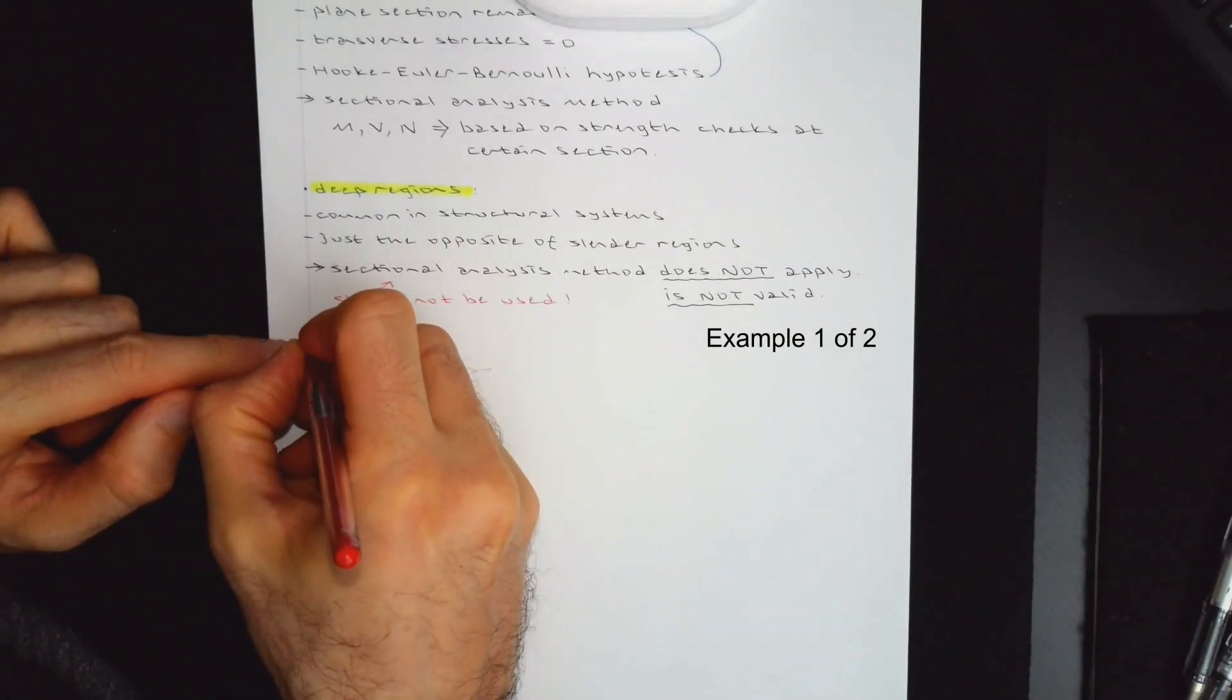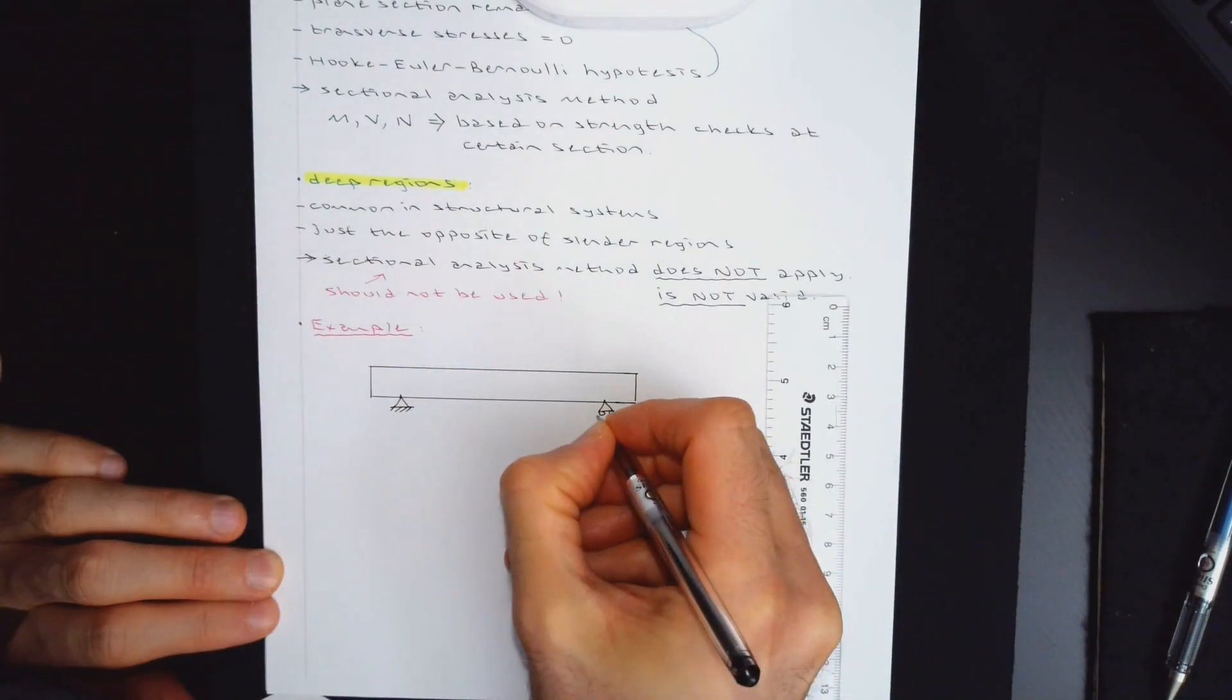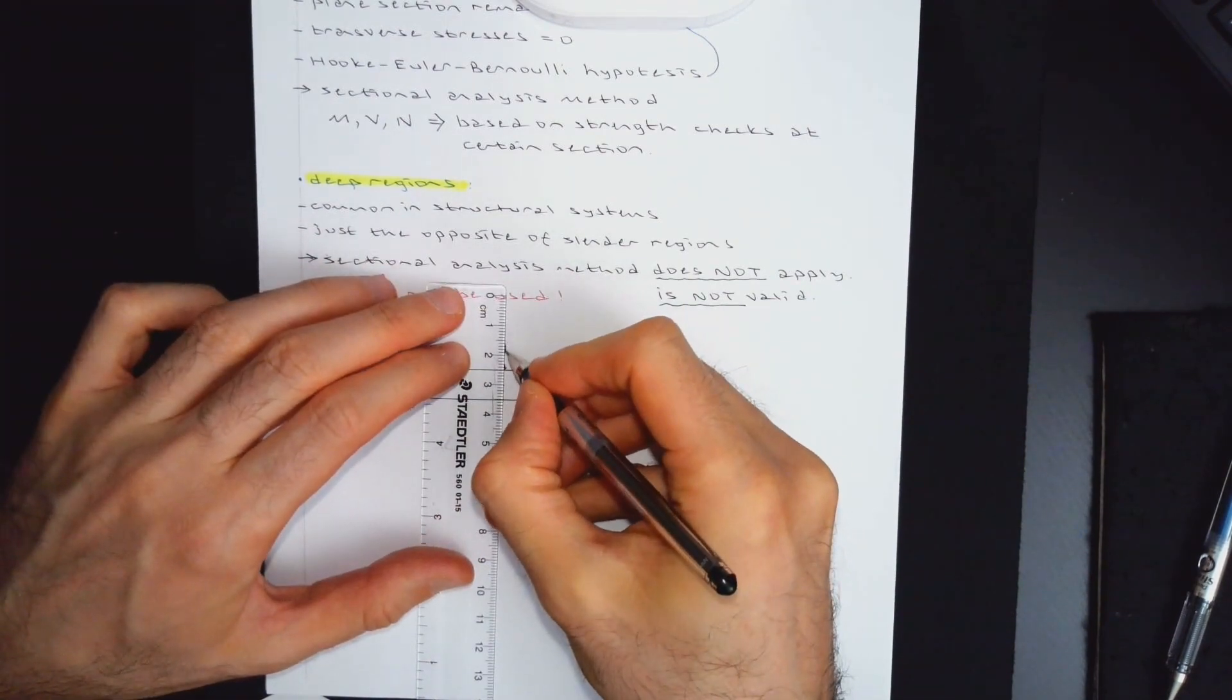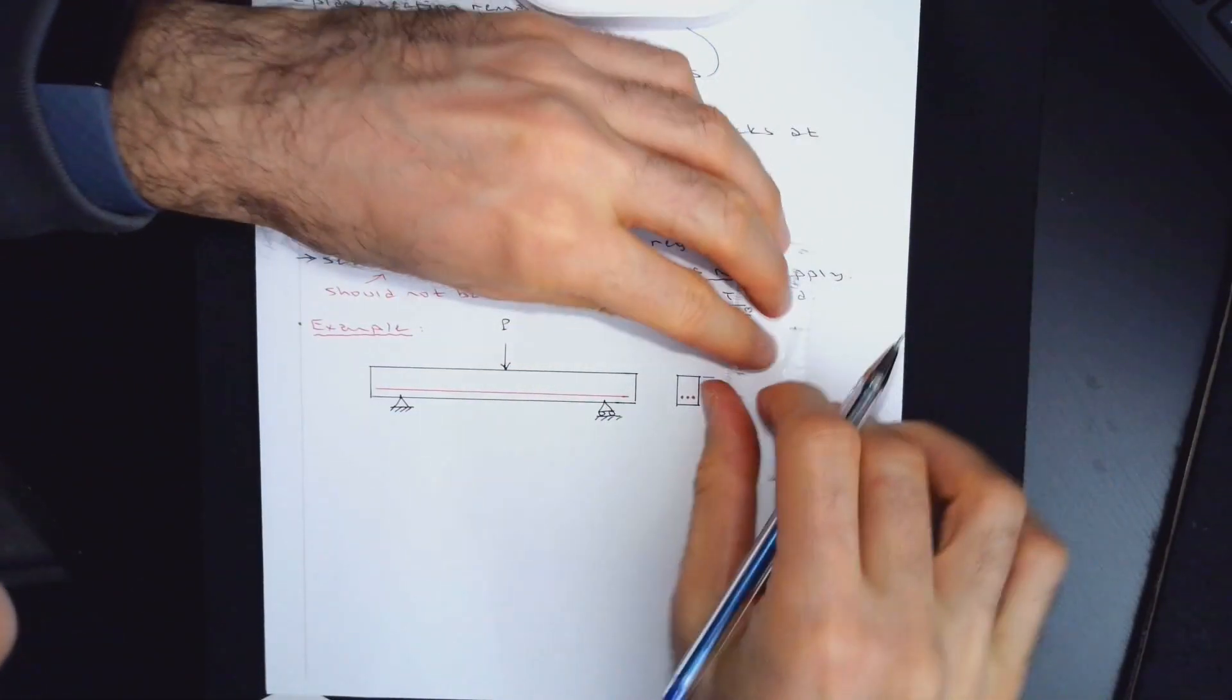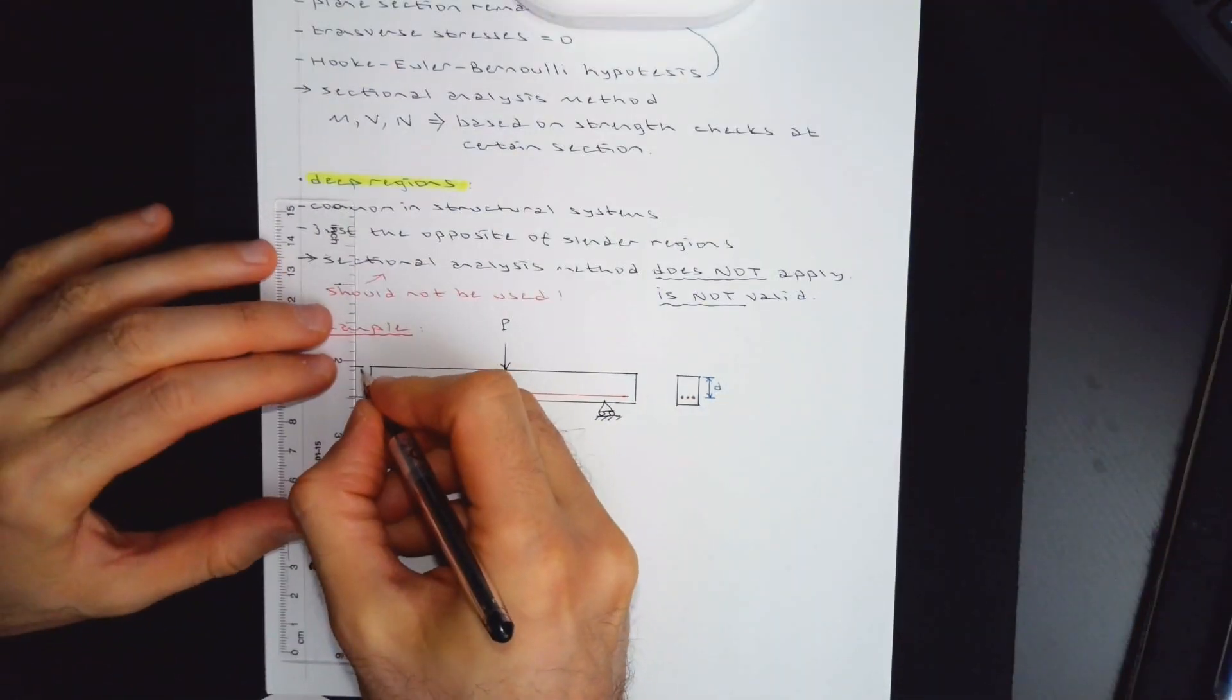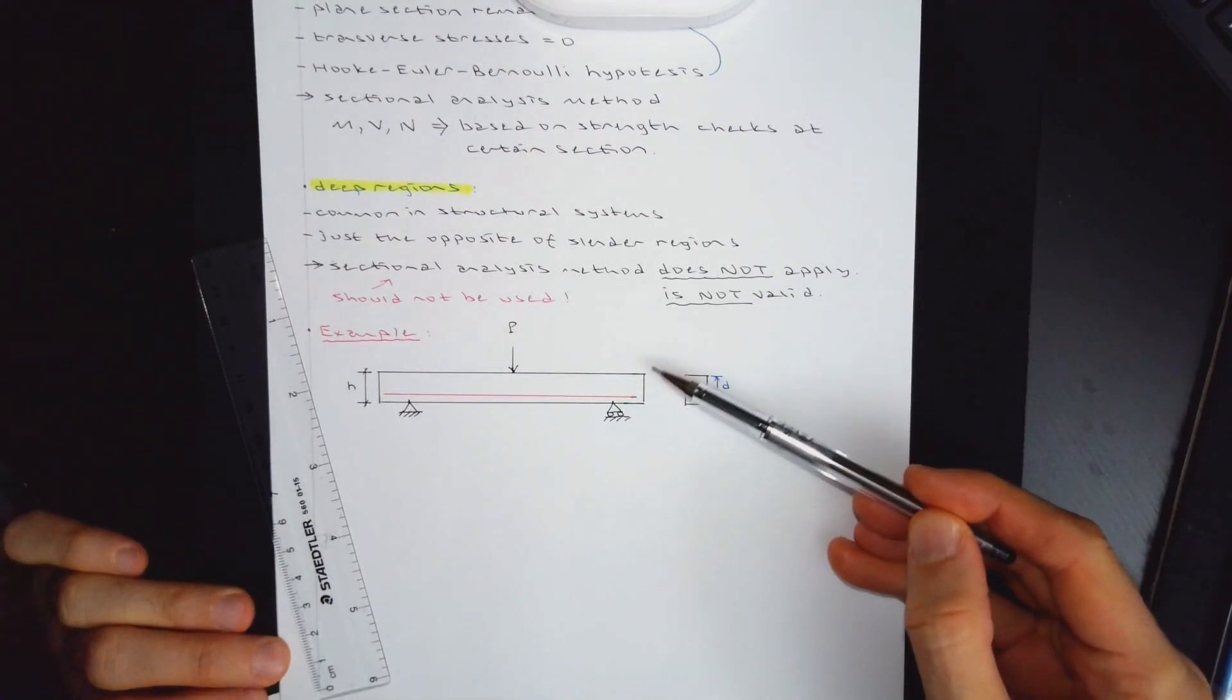And you would be surprised to see even a simply supported member you keep designing every day will also have regions which qualify for a deep region. So let's just do example one. This is going to be a simply supported member. One hinge, one roller. Mid span. Let's put a point load. This is cross section. A couple of reinforcing bars. We call this effective depth, which is represented by small d. This is the entire height of the section.